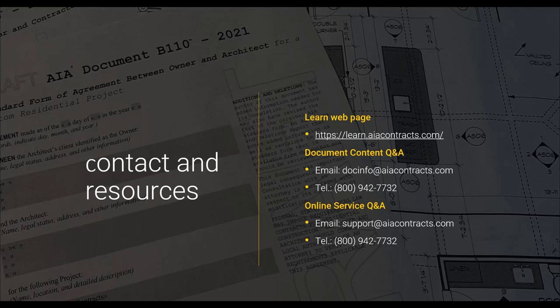A second question: are supplemental services anything that is not typically part of the architect's role? There are certain supplemental services, like programming, that an architect is typically qualified to do. There's a table of supplemental services — before signing the contract, you indicate whether you're doing them and how much you're being paid. Others include civil engineering services, which most architects think are probably best not under the architect's umbrella, but it's listed as a supplemental service the architect can agree to provide — that would be something not typically within the architect's role.